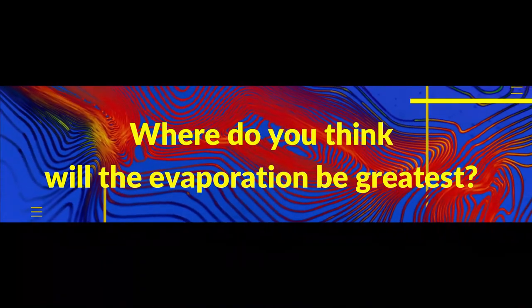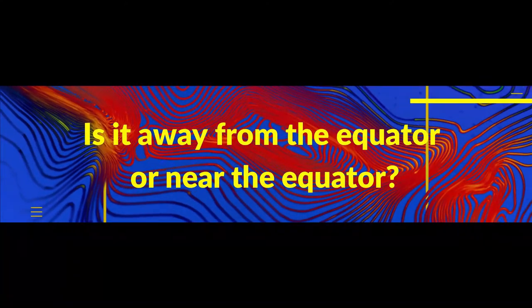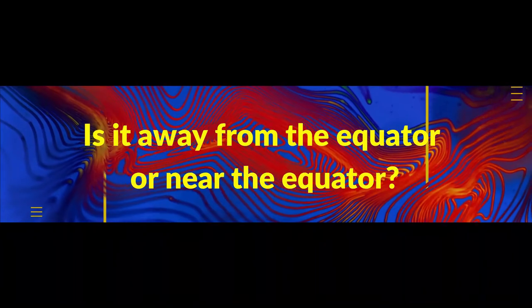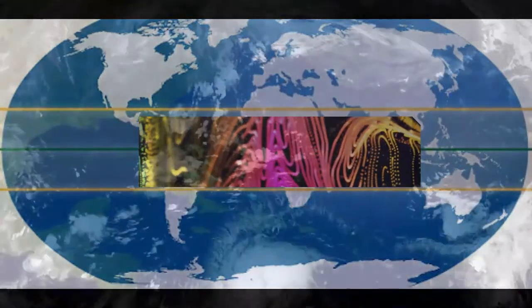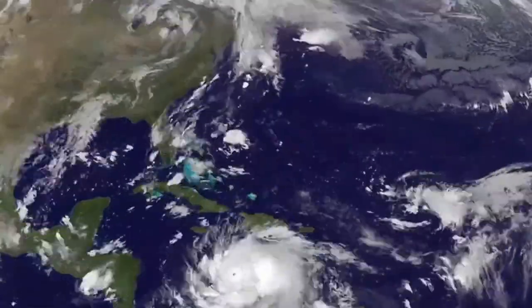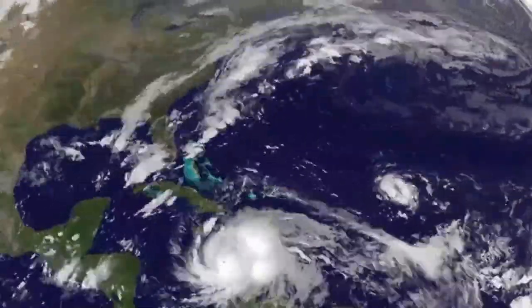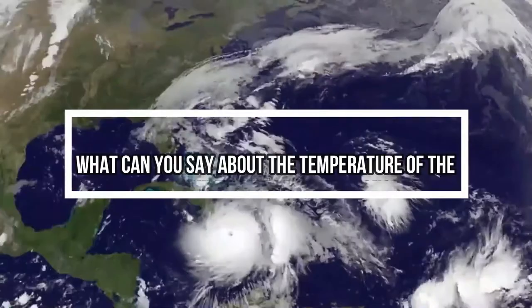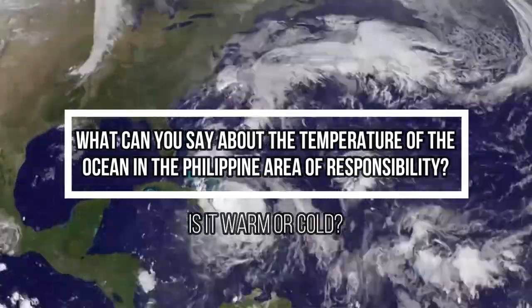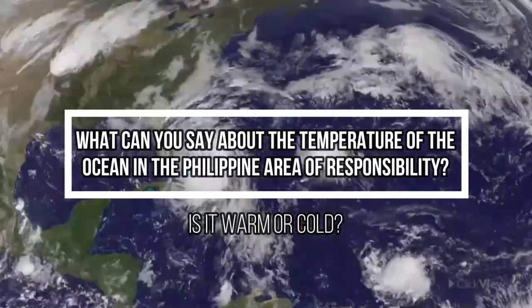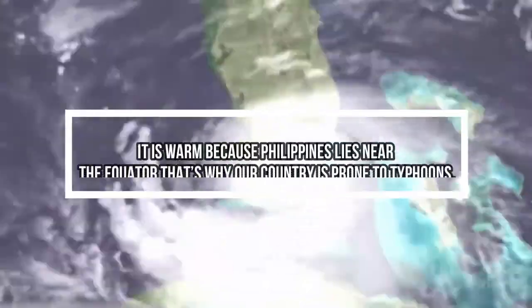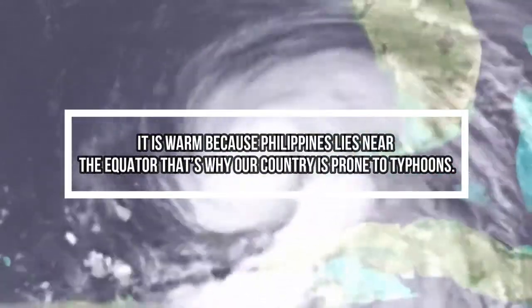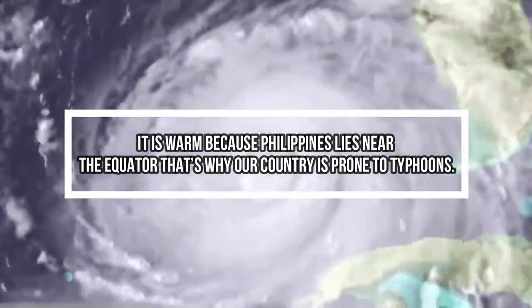So where do you think will the evaporation be greatest? Is it away from the equator or near the equator? Of course, the area near the equator. Tropical cyclones form in the ocean. So what can you say about the temperature of the ocean in the Philippine area? Is it warm or cold? Of course, it is warm because the Philippines lies near the equator. That's why our country is prone to typhoons.